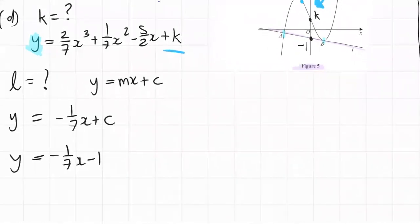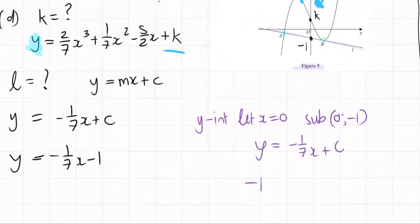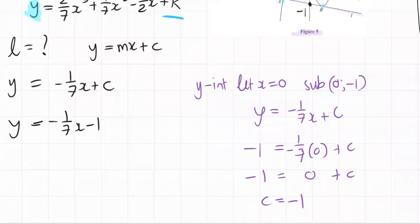If you want a more solid proof for y-intercept, you could let x equals zero. So you're basically subbing zero minus one into the equation y equals minus one over seven x plus c. So it would just be minus one where the y's go, minus one over seven times zero plus c, plus one over seven on both sides. Oh, because it's times by zero. There we go. So c is negative one. Just another method. But we can do it by inspection as well.